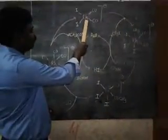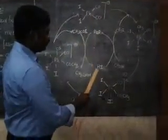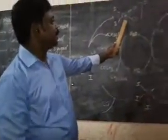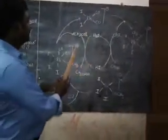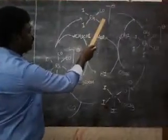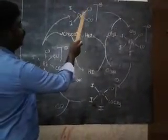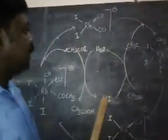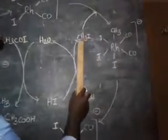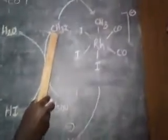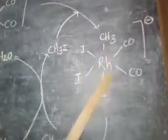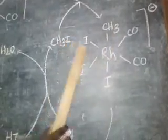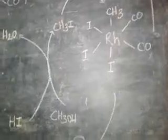The first catalytic cycle involves a rhodium-based catalyst, and the second one involves hydrogen iodide. In the first cycle, the active catalyst is a rhodium-based organometallic catalyst — it is di-iodo-dicarbonyl-rhodium(I). This active catalyst reacts with methyl iodide in the first step. Methyl iodide reacts with the catalyst to form a six-coordinated species, where one methyl group is added to rhodium and iodine splits and is also added to rhodium.